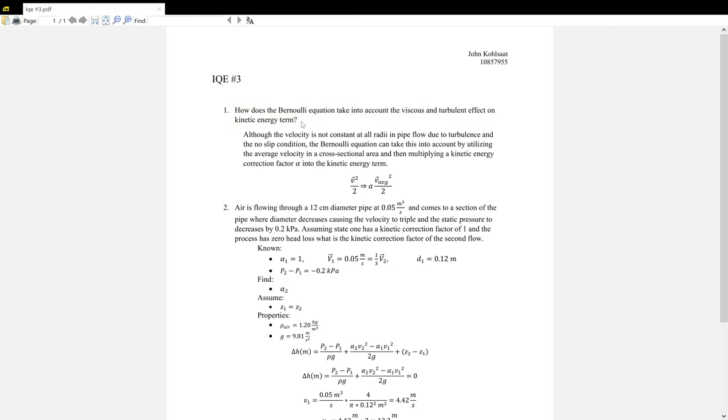The Bernoulli equation, at least the kinetic energy term, needs to take into account these two effects because they cause the velocity of the fluid to be different as a function of the radius. Closer to the walls, the velocity will be slower than the velocity in the middle.